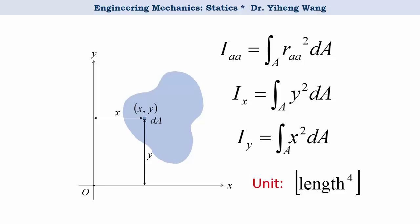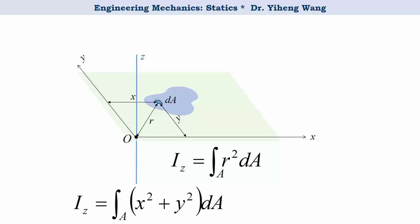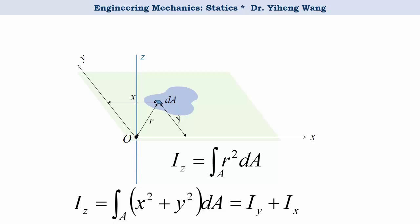Sometimes you may want to find the area moment of inertia about a point, say point O. In this case we are finding the area moment of inertia about a z-axis that is perpendicular to the xy plane and passes through point O. The perpendicular distance from the differential element to the z-axis is r, so I_z equals the integration of r squared dA. Because x, y, and r are the three sides of a right triangle, by the Pythagorean theorem r squared equals x squared plus y squared. Therefore I_z also equals the integration of (x squared plus y squared) dA, which equals I_y plus I_x, and this is normally known as J_O.